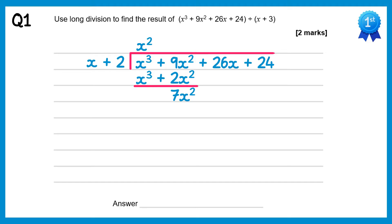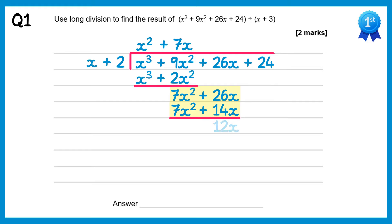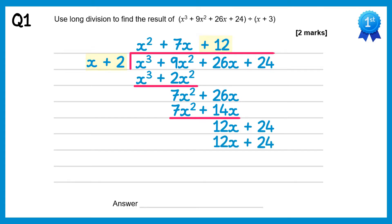Then bring down the next term, that's plus 26x, and do 7x squared divided by x which is plus 7x. Multiply back through: 7x times x is 7x squared and 7x times 2 is plus 14x. Now we subtract: 7x squared take 7x squared is 0, 26x take 14x is 12x. Then bring down the next term and do 12x divided by x which gives plus 12. Multiply back through: 12 times x is 12x, 12 times 2 is 24, and if you subtract these you get 0. So we have our answer, which is the quadratic at the top: x squared plus 7x plus 12.